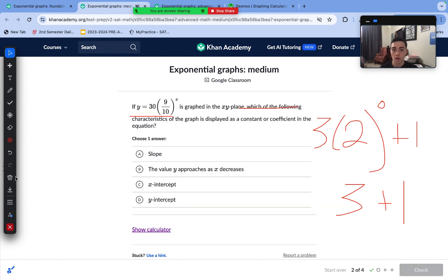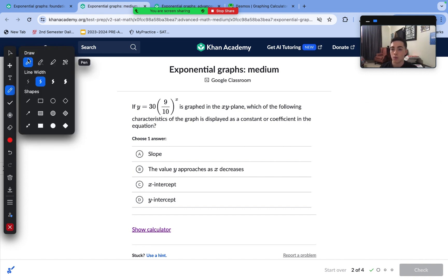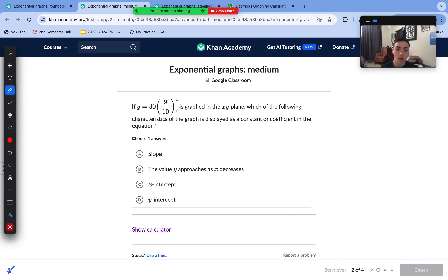Onto this next question, which of the following is displayed as a constant or coefficient here? We can see that this takes the form A(B^x), where A is the y-intercept, so the y-intercept is shown as that constant of 30.